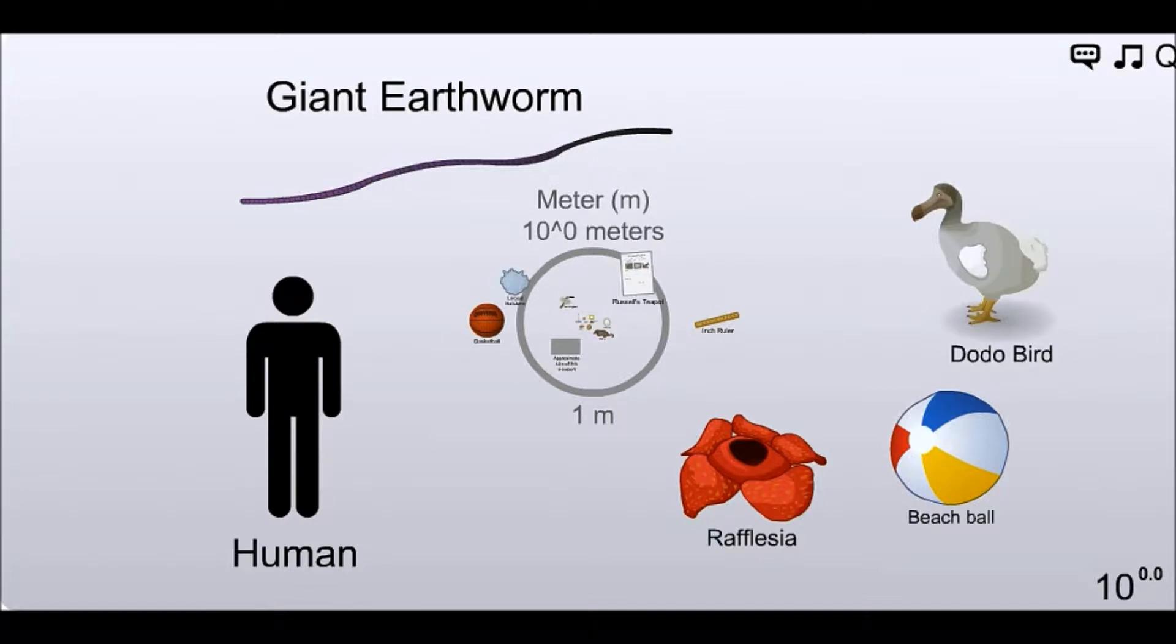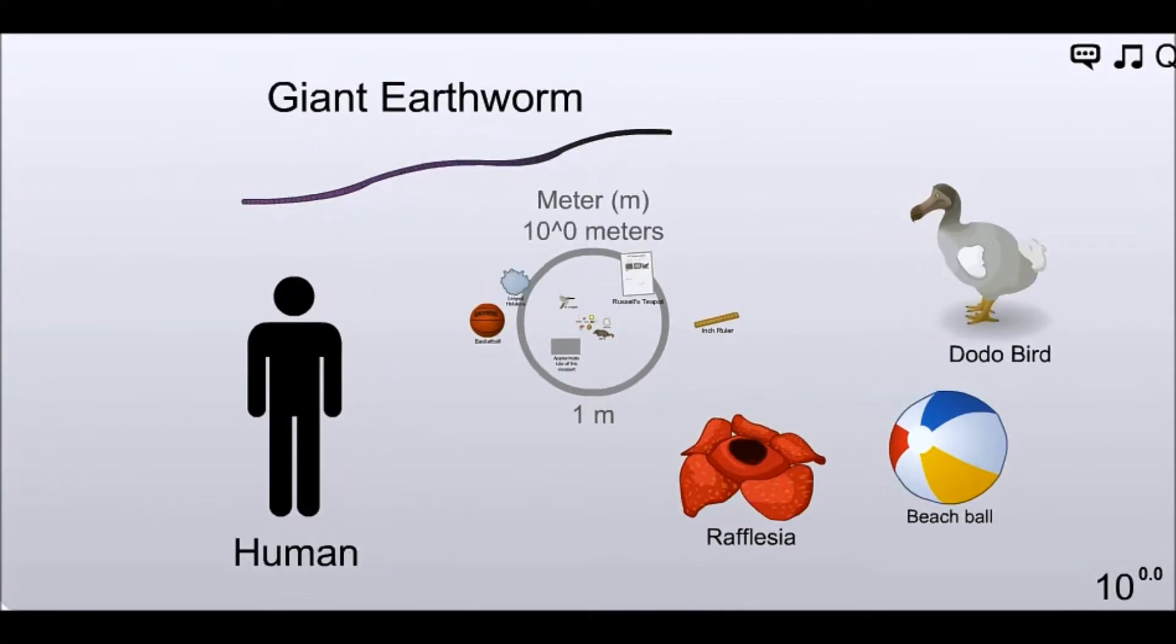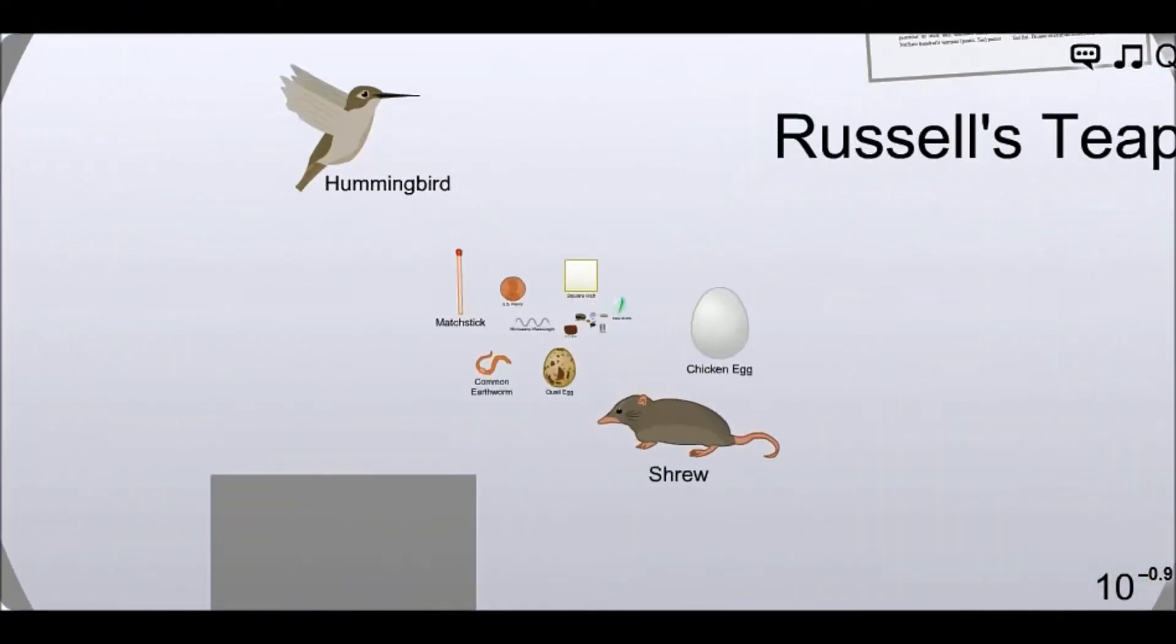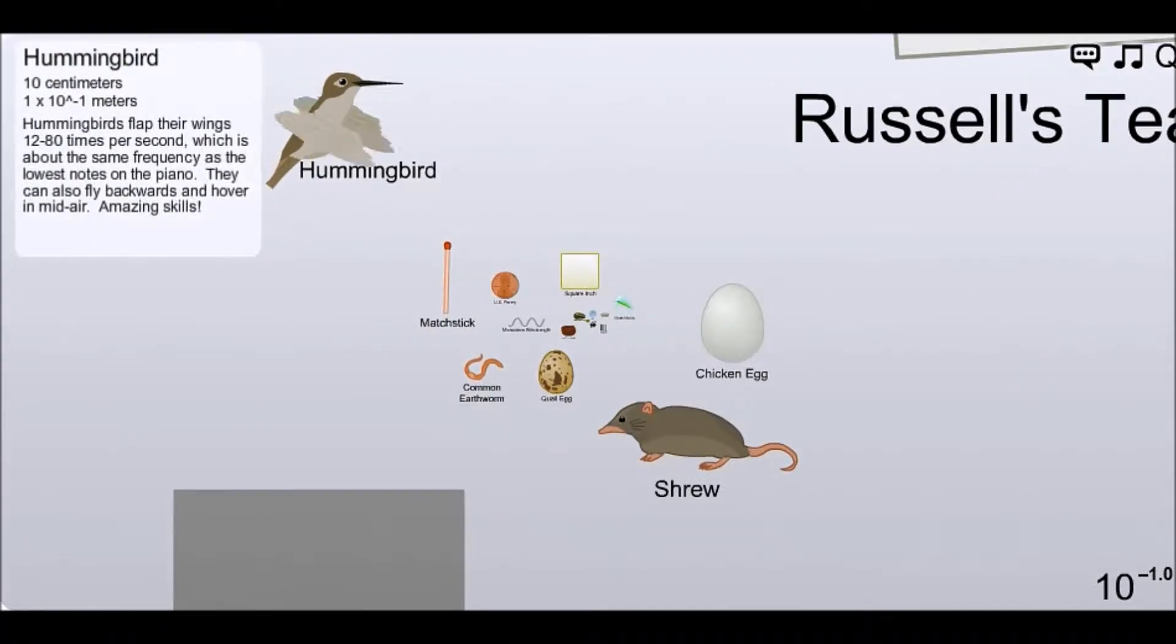We can go a little bit bigger or smaller. There is a sliding scale that accompanies this game. And if you take it, it's not being shown here because I've been stupid, but it's a sliding scale, it doesn't really matter. We take it and we go left, we go in zooming. We see a hummingbird. Hummingbirds flap their wings 12 to 80 times per second, which is about the same frequency as the lowest notes on a piano. So, they're baritones?